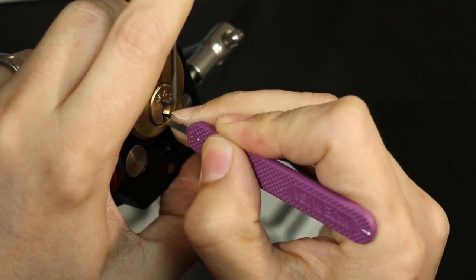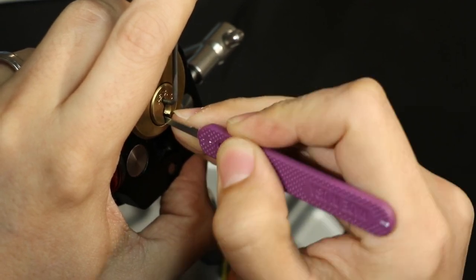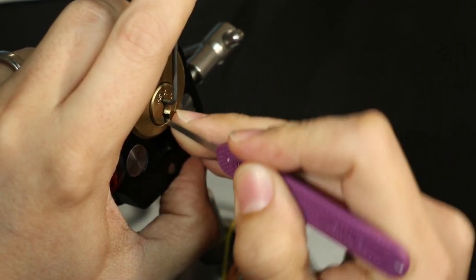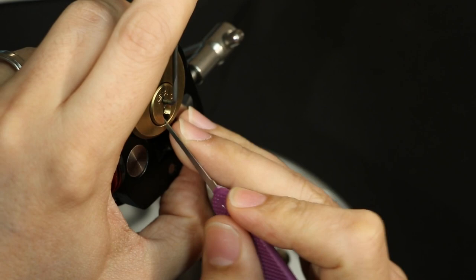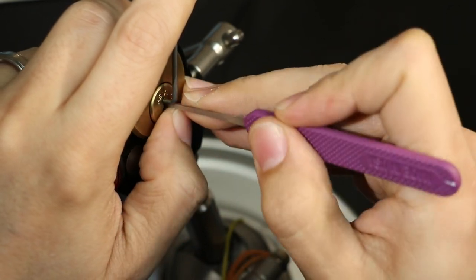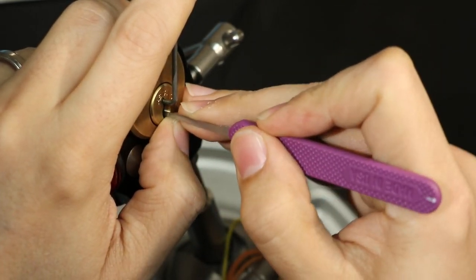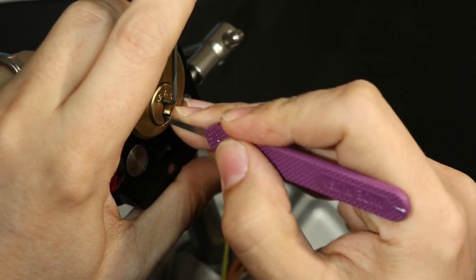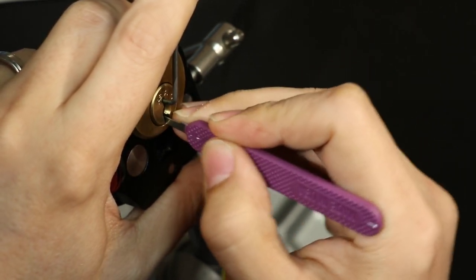You push on it until we get a nice false set going on. This first pin's really high, which is always really annoying in these locks. If the first pin is high, it makes it pretty tough to get your pick to go up.